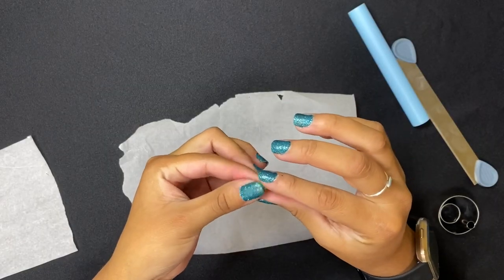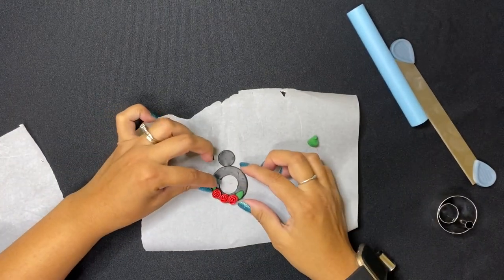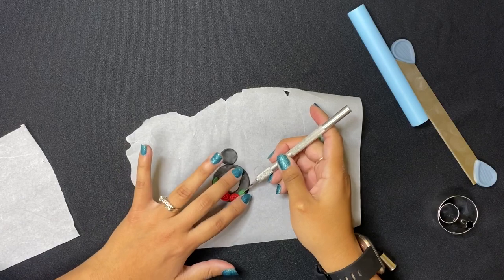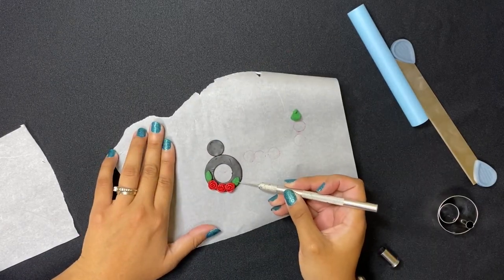Next up, we have our green piece. This one, you don't have to flatten as much. Just try to shape it into a basic leaf shape, and then after that, you'll use a toothpick or an exacto knife to cut little lines in it so it looks more like a leaf.